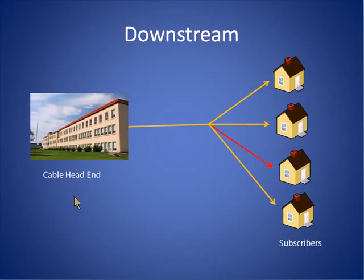In a cable system, downstream data typically is broadcast to all subscribers. Header information in the packets allows the recipient to intercept the data while allowing all other recipients to ignore the packets meant for other subscribers. In this picture, we see house number three is accepting data from the cable head end while the other three houses are ignoring the data.